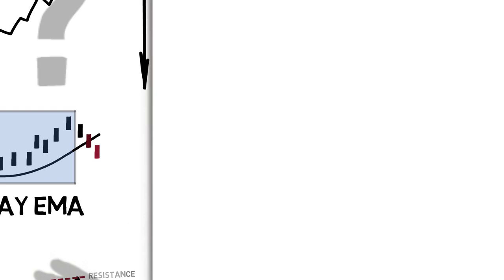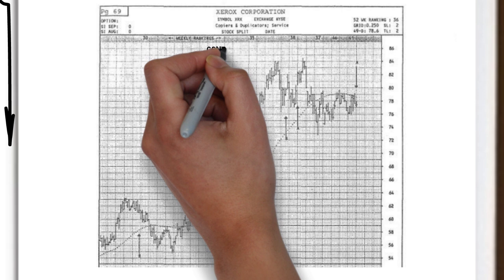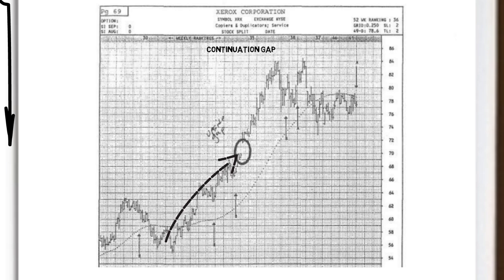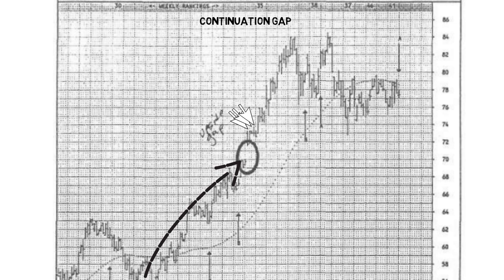Another tactic Schwartz uses is gap trading, and he presents an example in his book, which we can see here. This example is called a continuation gap. A continuation gap is determined by the increasing trend prior to the gap occurring. It is a bullish signal, but Schwartz warns that a trade should only be considered if the price remains above the gap for three consecutive days.